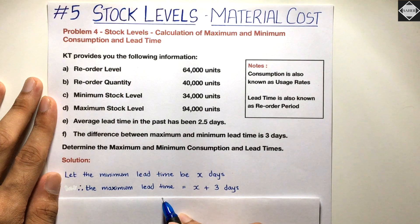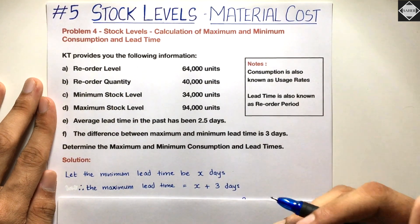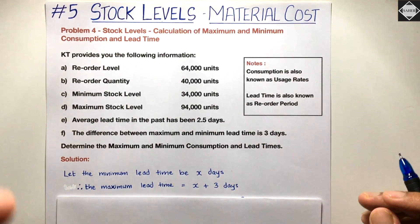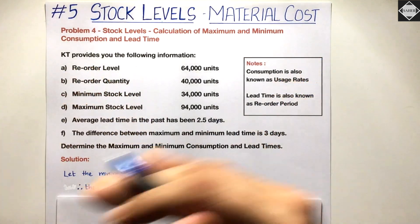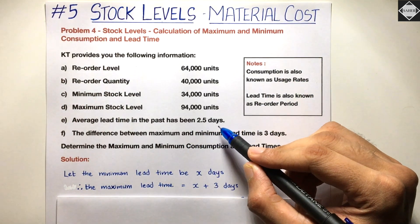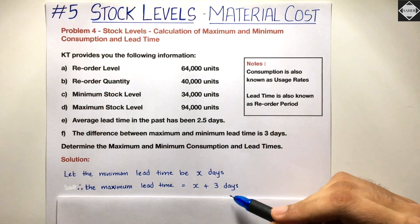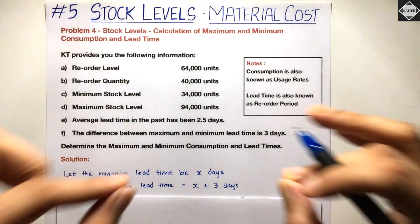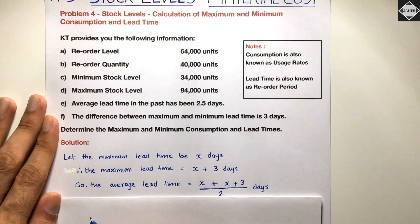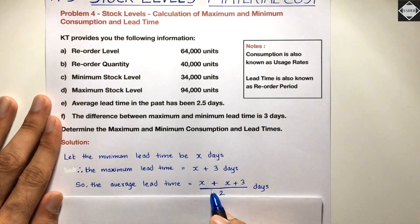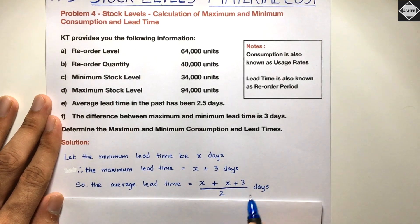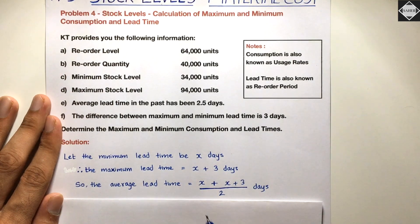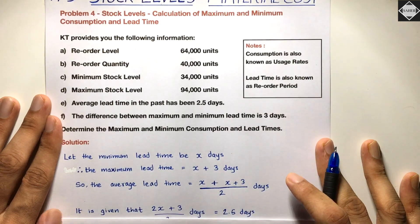Now we use the average lead time formula: average lead time = (minimum lead time + maximum lead time) ÷ 2. We substitute our assumed values: average lead time = (x + (x + 3)) ÷ 2. They have given the average lead time as 2.5 days, so we now solve for x.